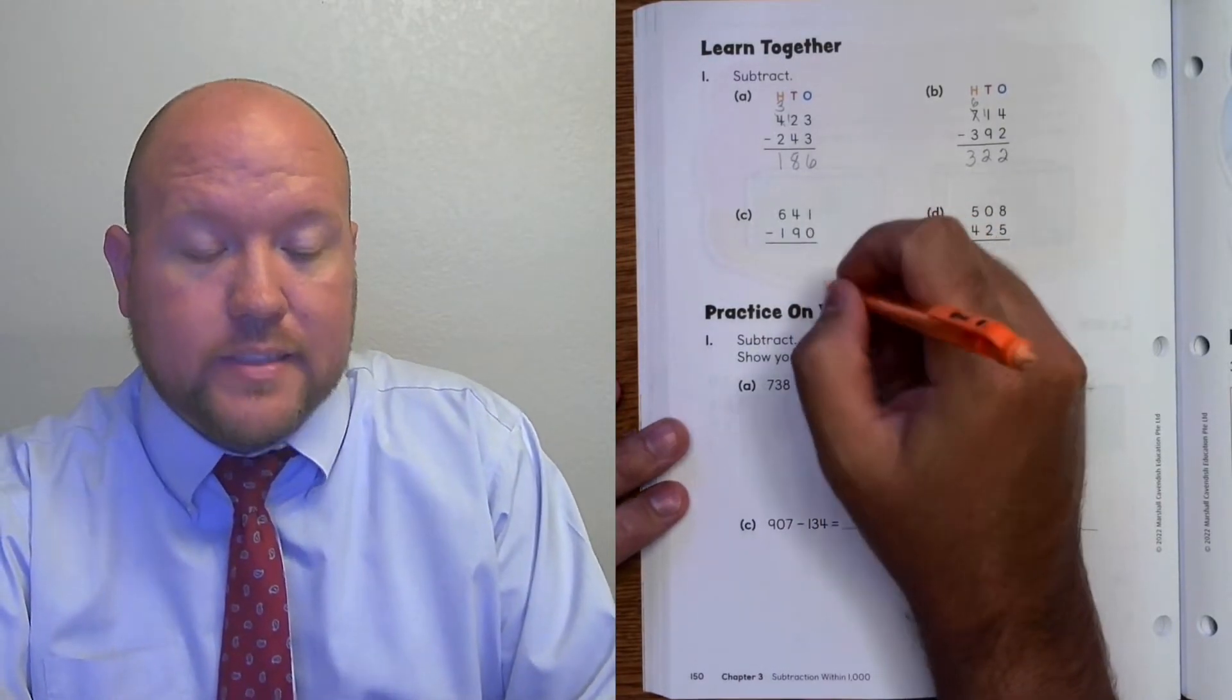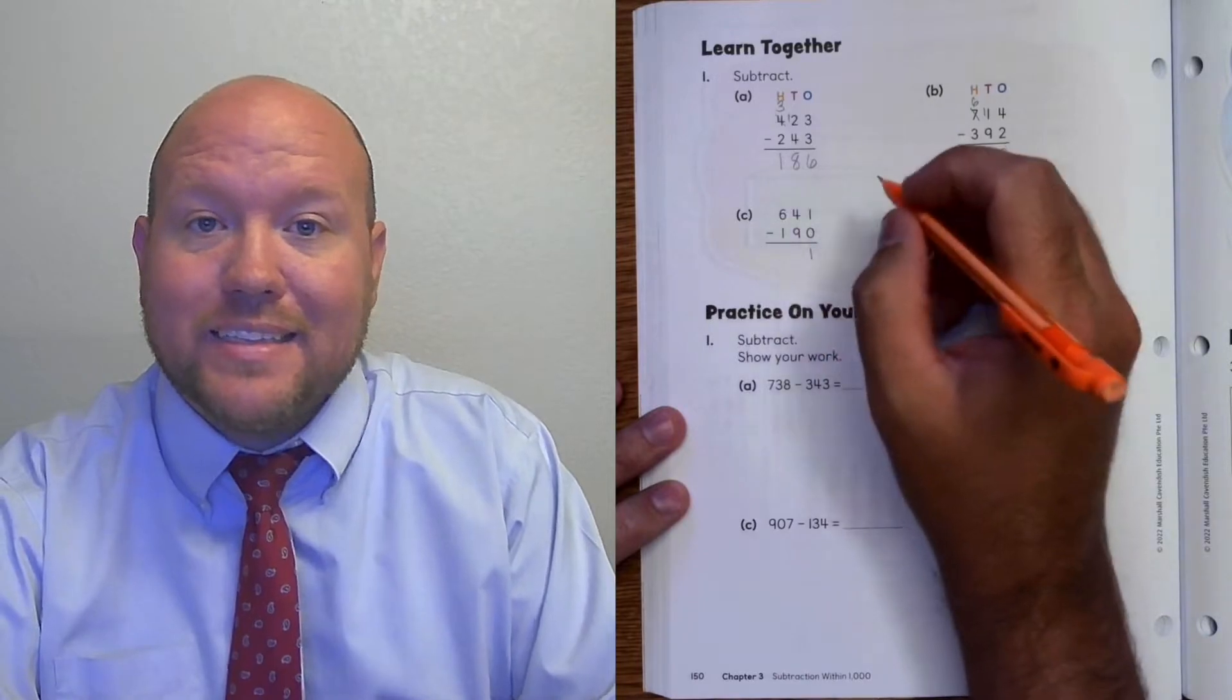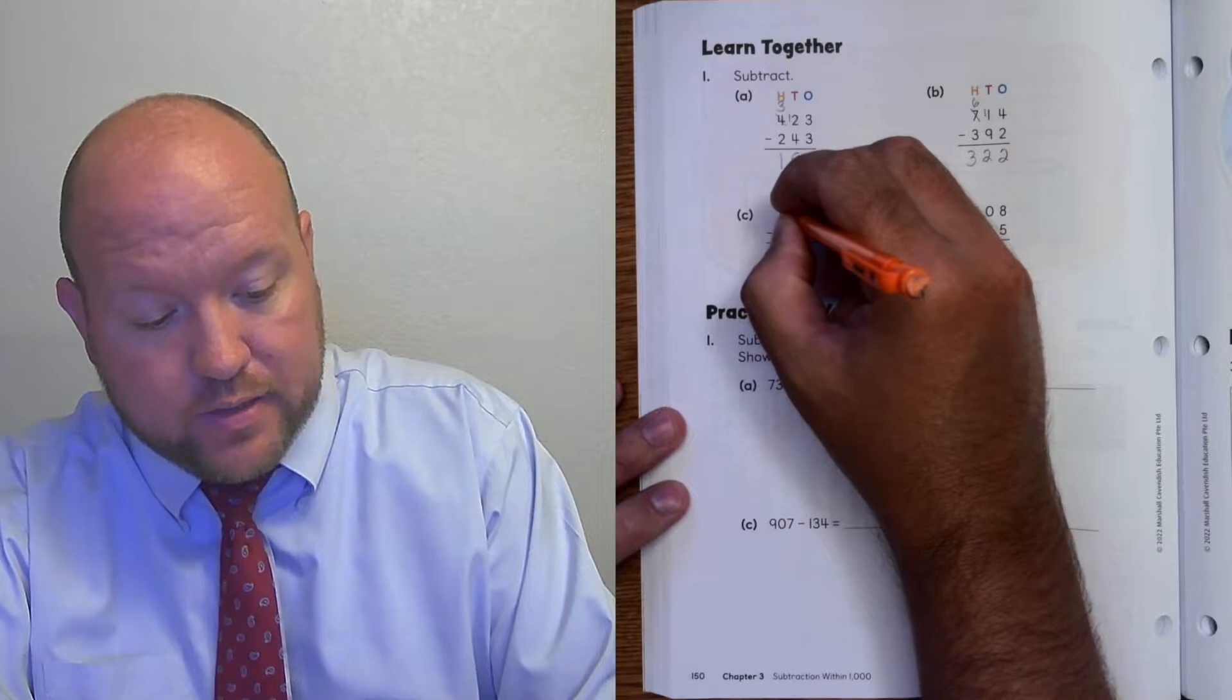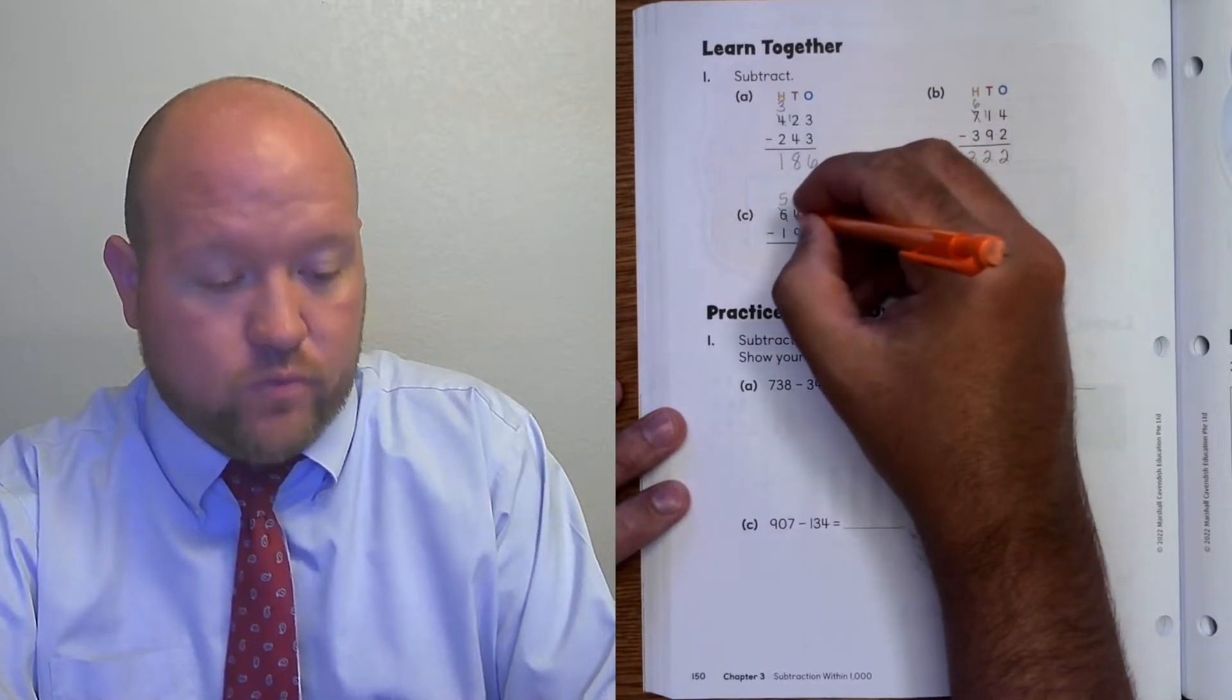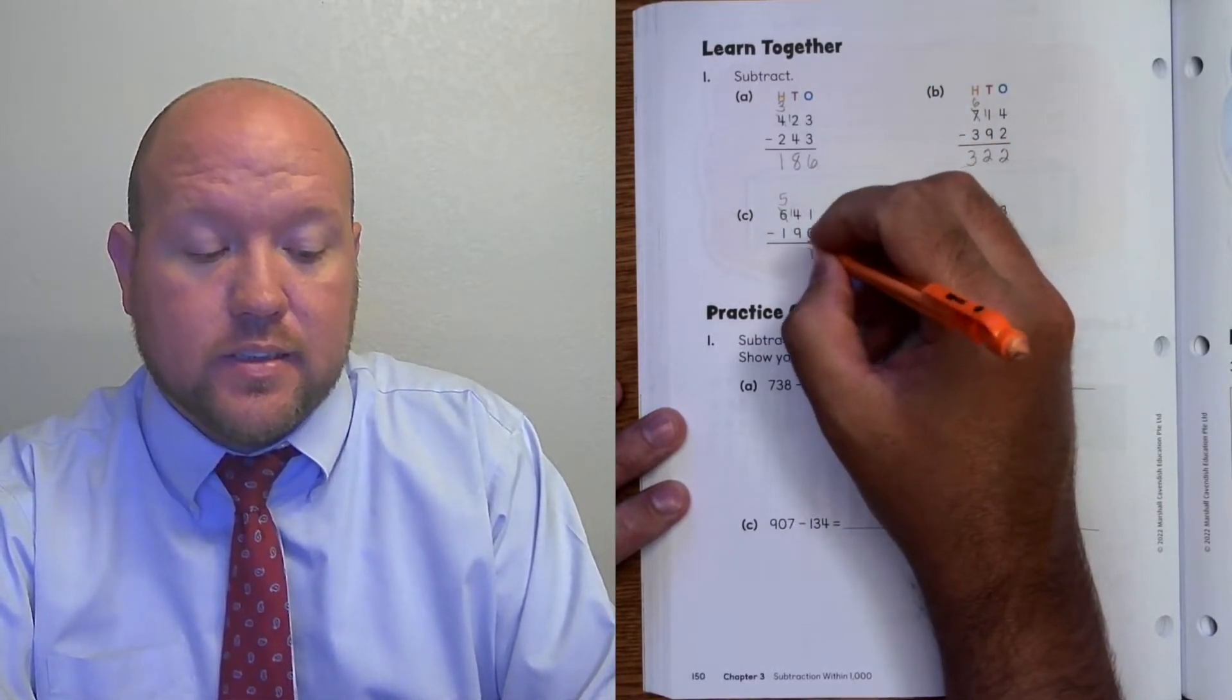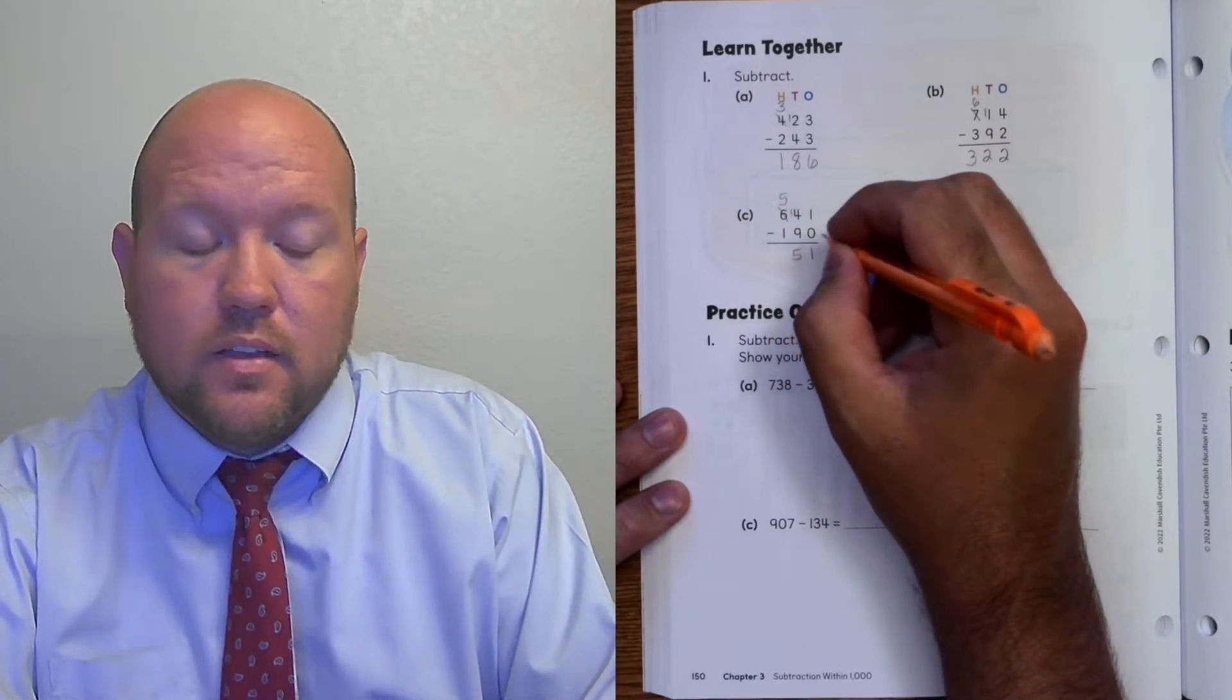1 minus 0 is 1. 4 minus 9 is a negative number. I need to rename. Cross out the 6. It becomes a 5. And the 4 becomes 14. 14 minus 9 is 5. And 5 minus 1 is 4.